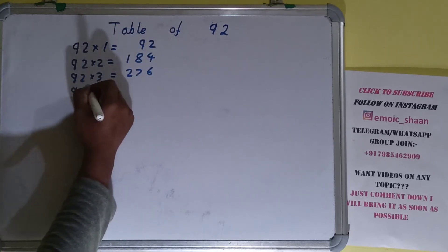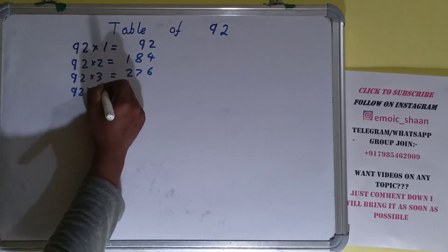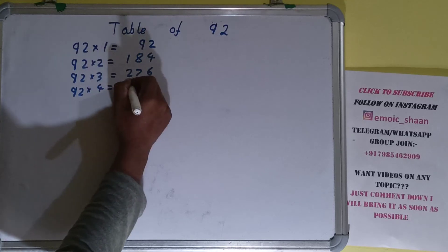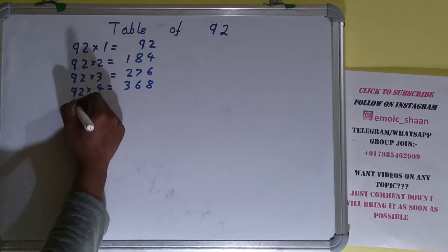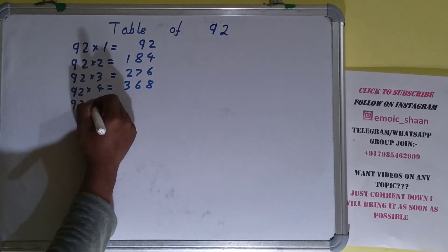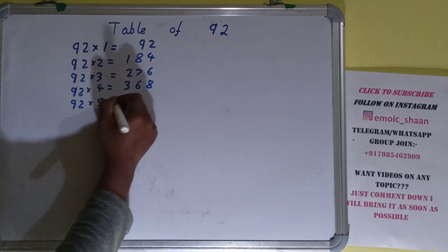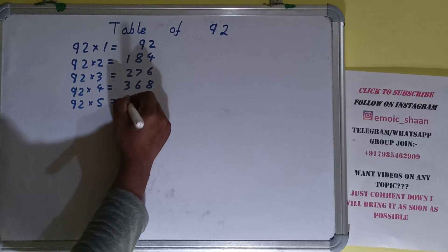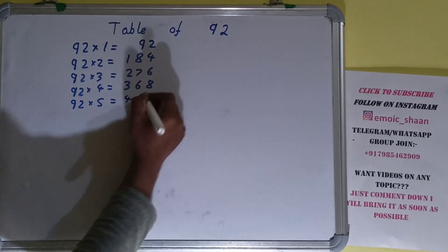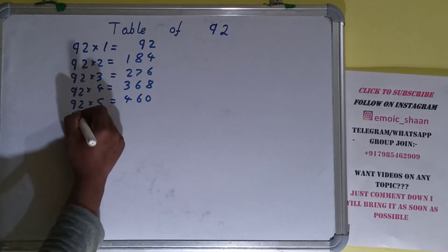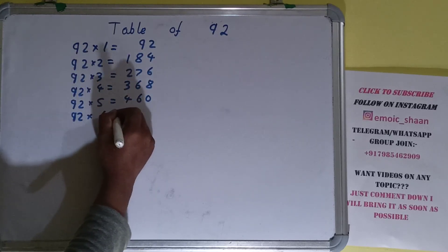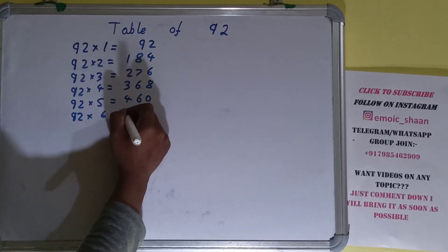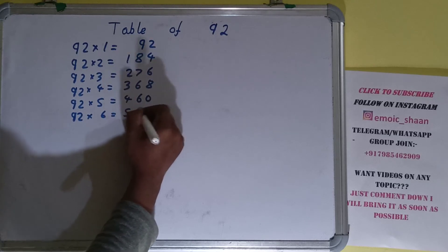92 into 4 is 368. 92 into 5 is 460. 92 into 6 is 552.